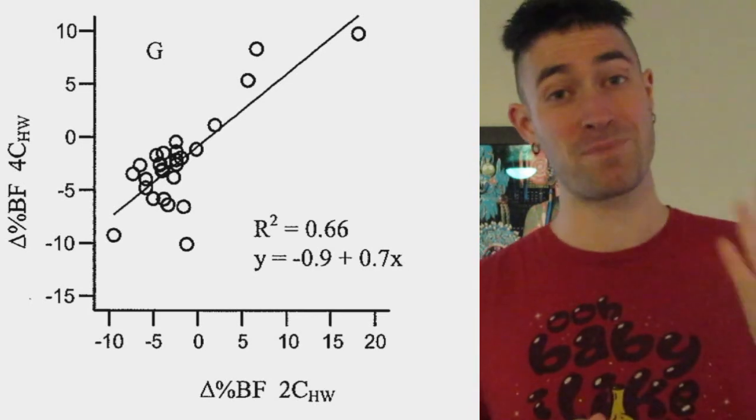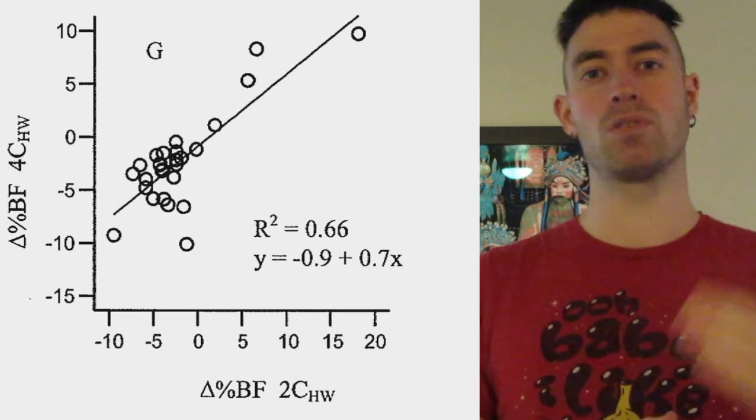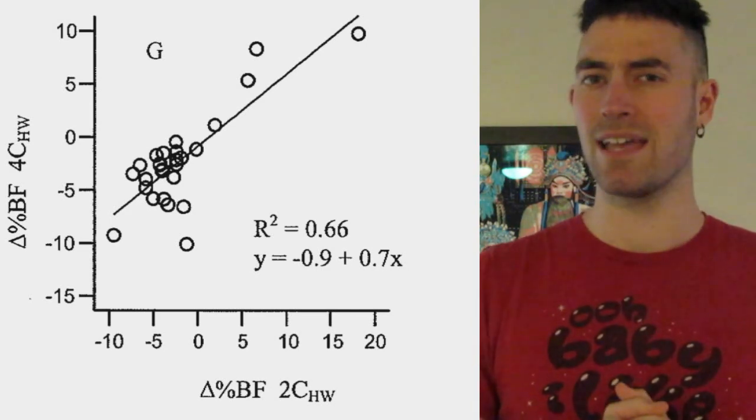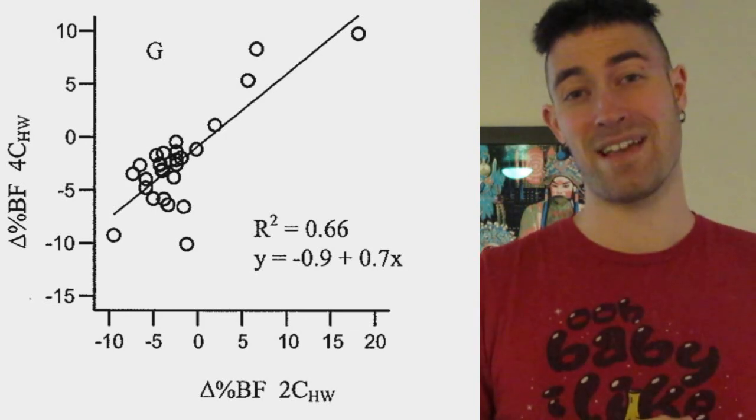Their friend, person number two, also lost 10% fat — what did hydrostatic weighing say? It said they lost 20% fat. So person one and person two, best friends since childhood wanting to lose weight together, both lost the same amount. But hydrostatic weighing told person one they lost nothing, and person two they lost 20%. Now they hate each other — hydrostatic weighing broke up the friendship. It could happen.